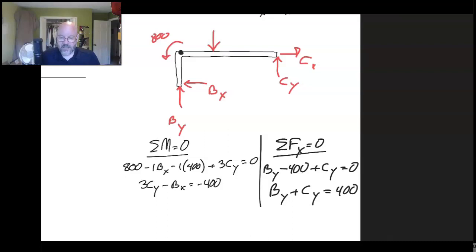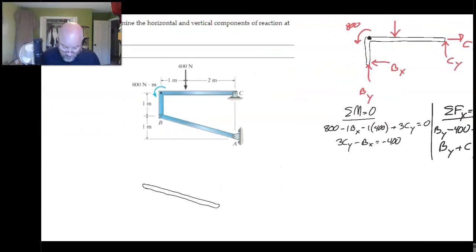Just looking at these last two equations here, I've got one, two, three equations, three unknowns and only two equations. So I need some more information. No worries. I have a whole other component. I've got a whole other part to this structure that I can look at.